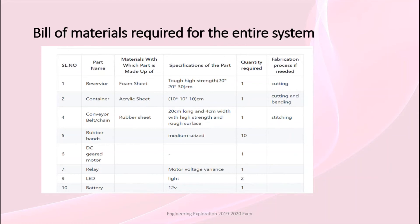For the bill of materials, we use foam sheet, acrylic sheet, one rubber for the slingshot, and a conveyor pad. This is our bill of materials.